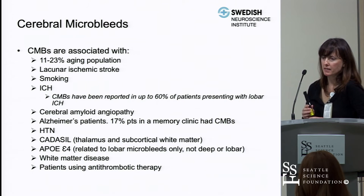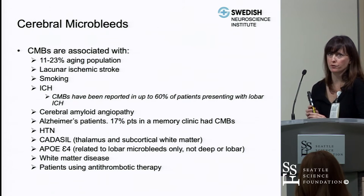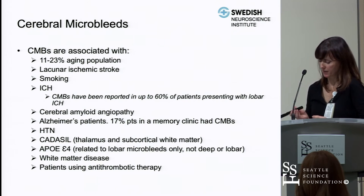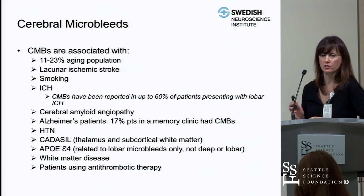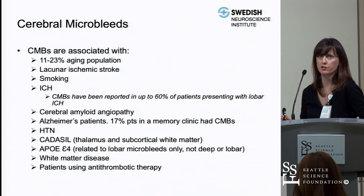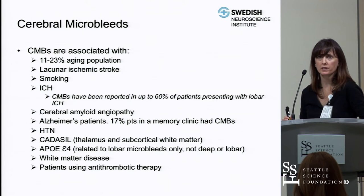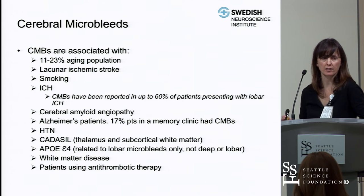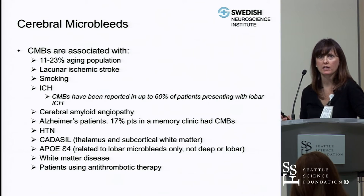Many case series and longitudinal studies have examined who has cerebral microbleeds. Studies of the aging population, such as the Rotterdam study, found that up to 11% to 23% of the aging population can have cerebral microbleeds. There is also an association with lacunar ischemic strokes and leukoaraiosis. Smoking is a risk factor. Up to 60% to 70% of patients presenting with lobar intracranial hemorrhage have cerebral microbleeds on MRI with gradient echo or susceptibility-weighted images.